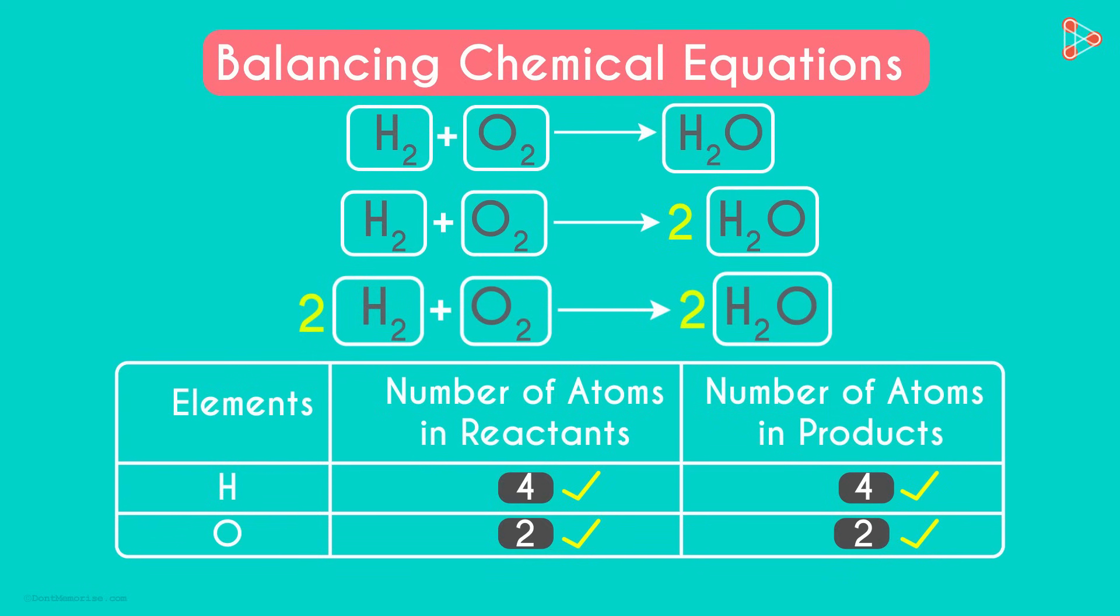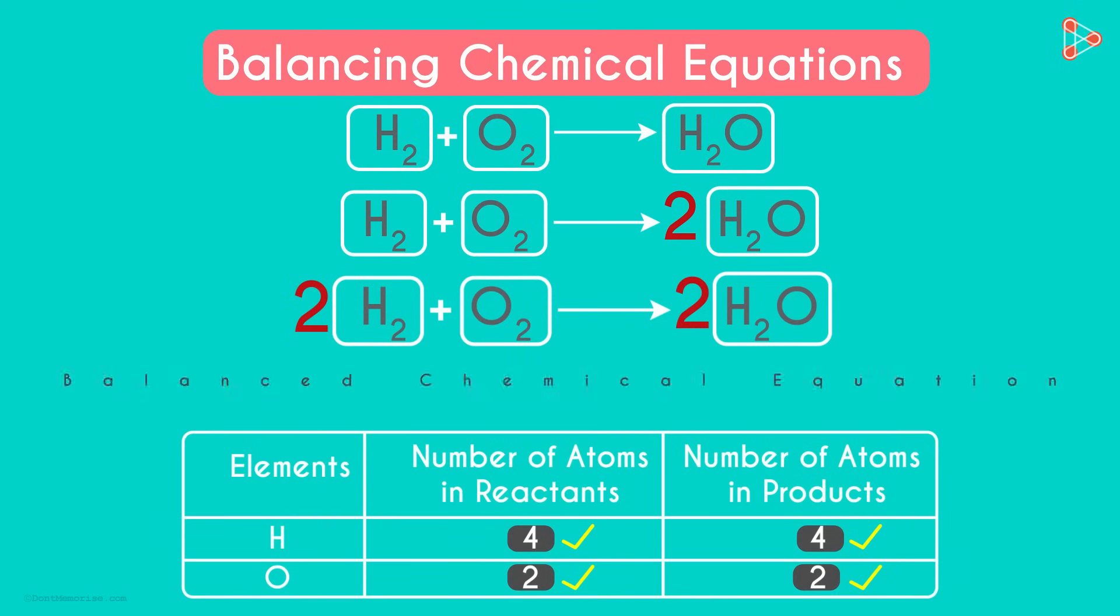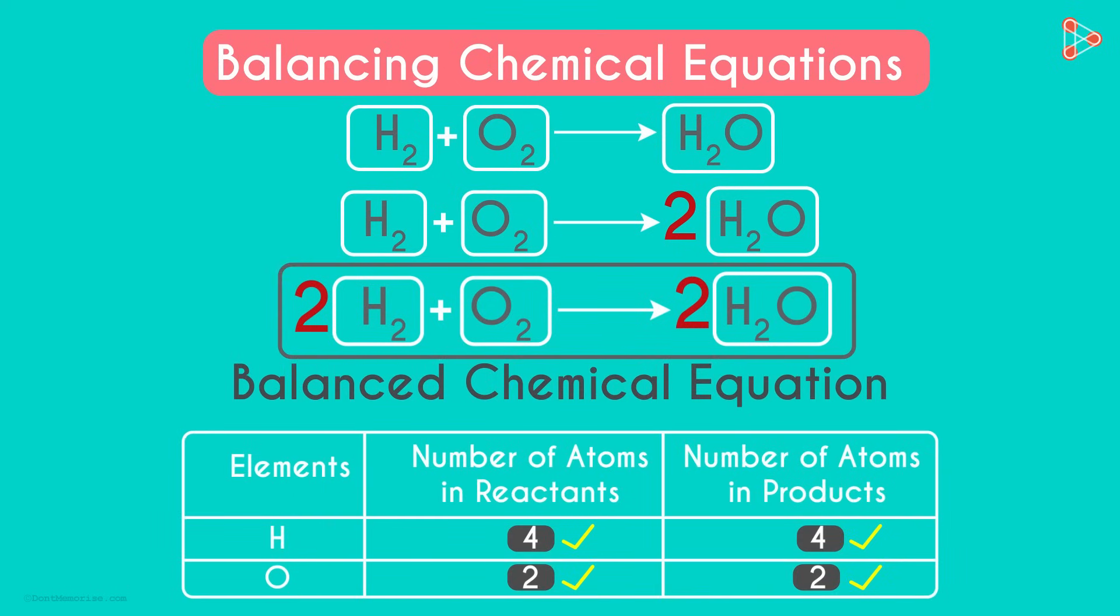So we simply multiply the appropriate elements or compounds as necessary to balance each and every element. When all elements are balanced, we say that the chemical equation is balanced.